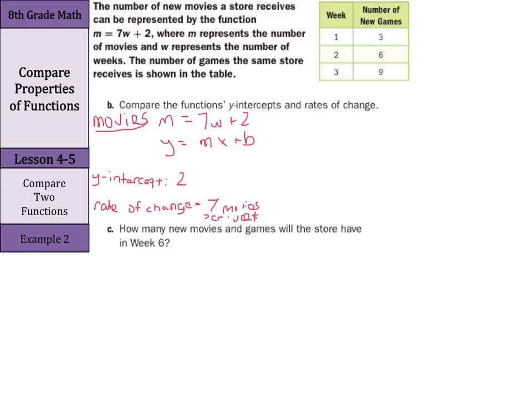Now, what about our games? The games is a little more complicated. We need to actually calculate our rate of change and our y-intercept. And let's deal with the rate of change first. Now, if we look at how we change with the number of games, this is increasing by 3 each time. Whereas the weeks are increasing by 1 each time. So, that's a change of 3 games per 1 week. So, our rate of change is 3 games per week.